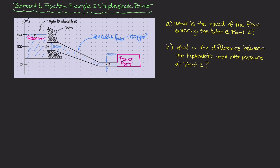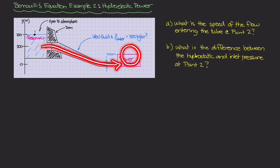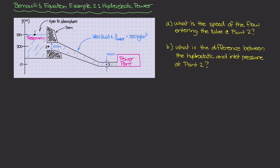In this system, we have a reservoir held back by a dam. At some point inside the dam there is an intake pipe that flows all the way down into a power plant containing a turbine. The liquid coming in spins the turbine and generates electricity. You often see these systems in mountains, where a reservoir at the top feeds water down to a power plant near the base, generating hydroelectric power.